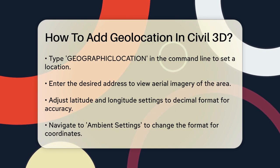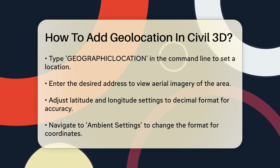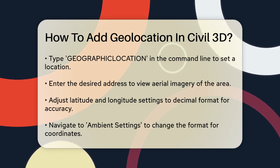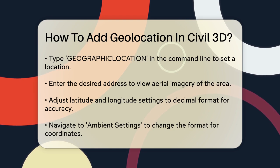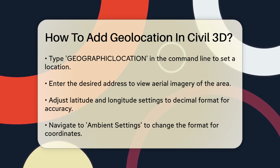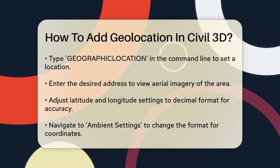Go to Ambient Settings, then Latitude and Longitude, and change the format to decimal. This ensures that when you enter the coordinates, they are accepted correctly.